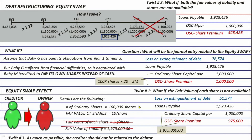Before we end, two important points. First, exam questions on asset and equity swap typically focus on the journal entry for restructuring, especially the gain or loss on debt restructuring. Second, gain or loss on debt restructuring is reflected in the income statement or profit and loss statement — not in other comprehensive income.